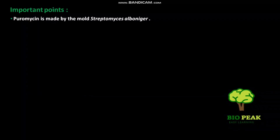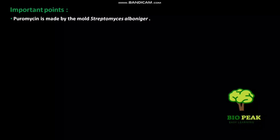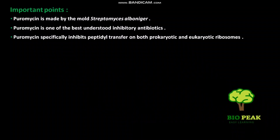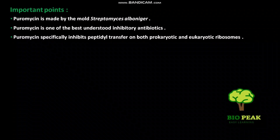Puromycin is made by the mold Streptomyces albuniger and is one of the best understood inhibitory antibiotics. Puromycin specifically inhibits peptidyl transfer on both prokaryotic and eukaryotic ribosomes.